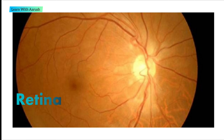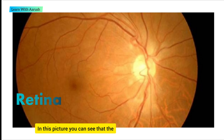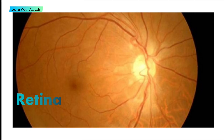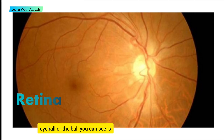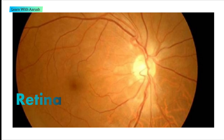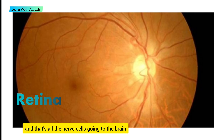In this picture, you can see that the eyeball — that whole ball — is the retina. Inside are nerves, and those are all the nerve cells going to the brain.